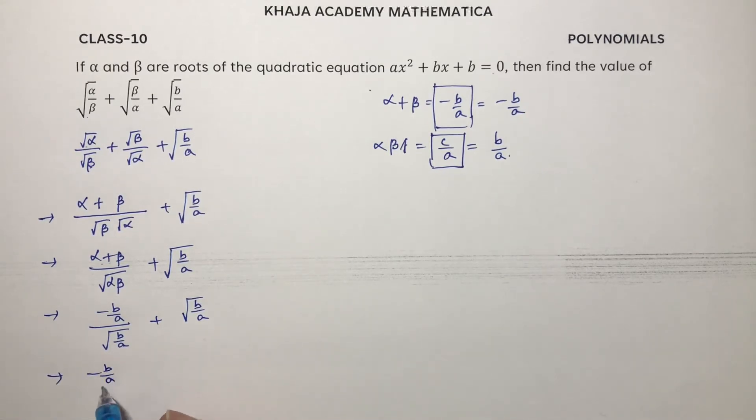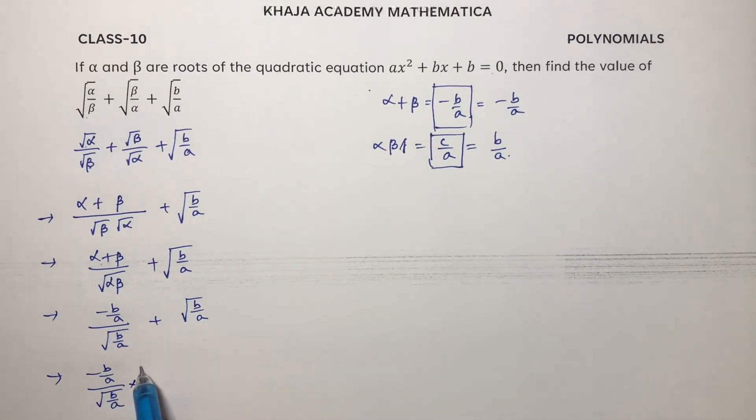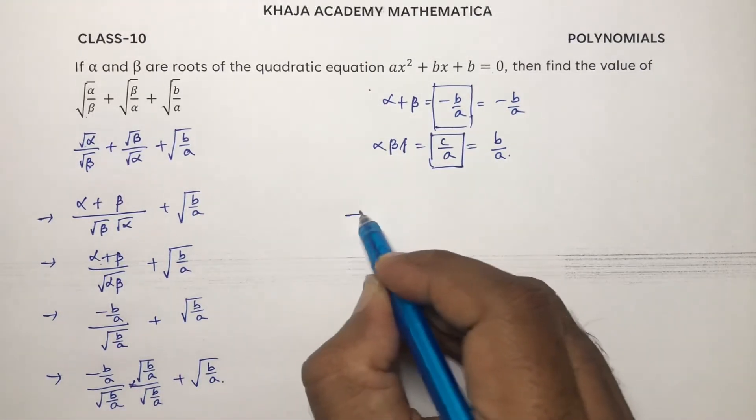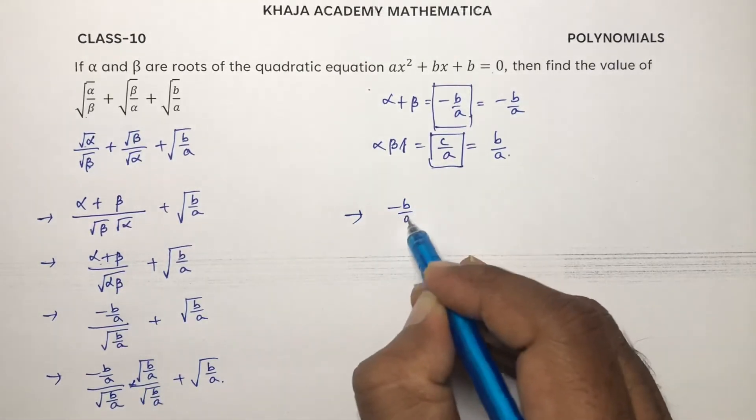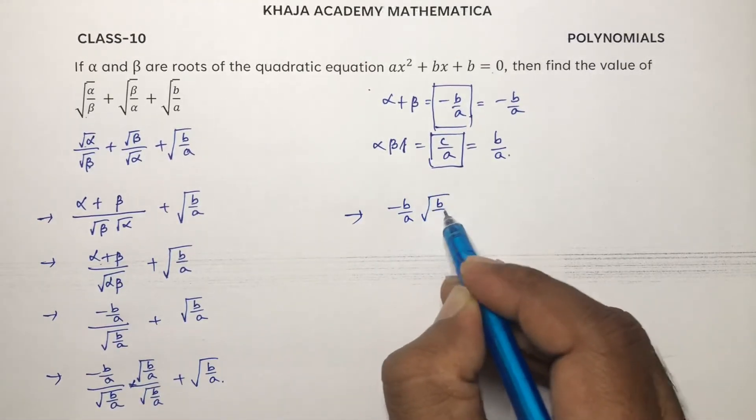Minus b by a by root b by a. If we rationalize, multiply by root b by a by root b by a, plus under root b by a. The next step: minus b by a into root b by a.